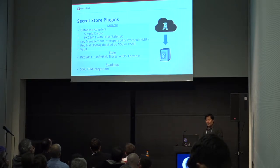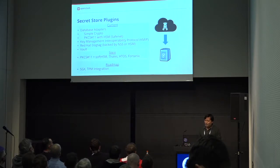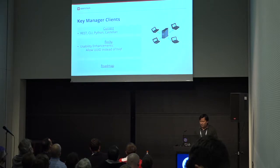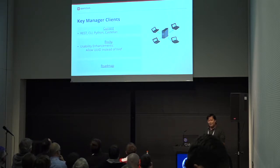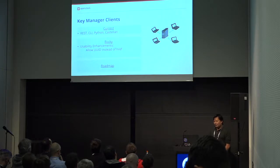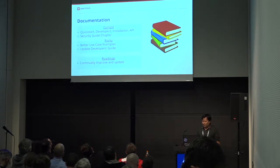Fortanix is also supported via PKCS 11. On the roadmap for the future, we're hoping to do more SGX work and more TPM integration. On the client side, not much has changed other than the UID support — we still have the REST API, a CLI, a Python client, and of course Castellan itself.